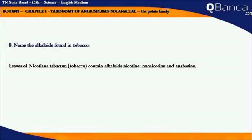Name the alkaloids found in tobacco. Leaves of Nicotiana tabacum contain alkaloids: nicotine, nornicotine, and anabasine.